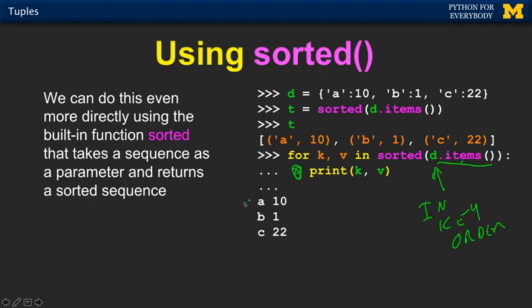So it's going to print out A, B, C — regardless of the order inside the dictionary, we sort it before we loop through it. That's how we get the dictionary in key order, but not value order.